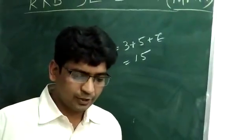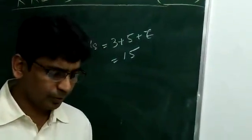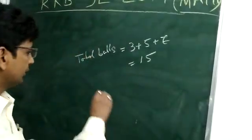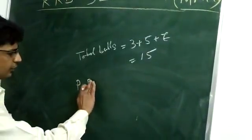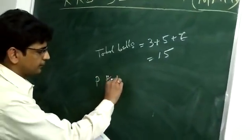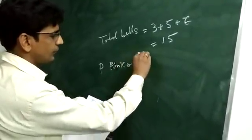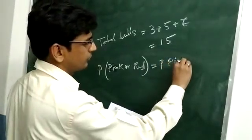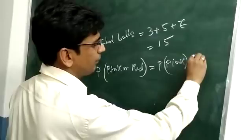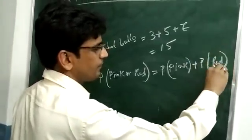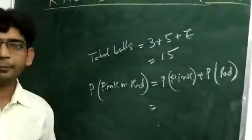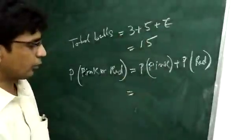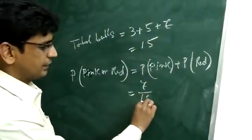If one ball is drawn at random from the bag, what is the probability that it is either pink or red? The probability of pink or red is equal to the probability of pink plus the probability of red. The probability of pink: favourable balls are 7, total balls are 15, so it is 7 by 15.